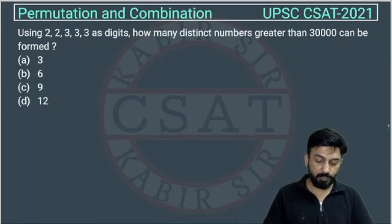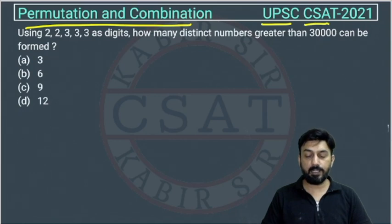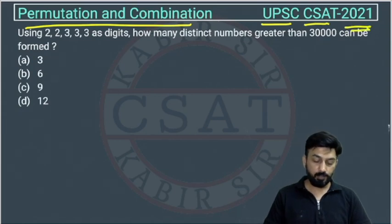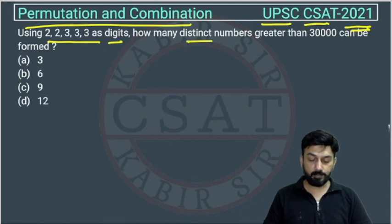This is a question from permutation and combination that was asked by UPSC in CSAT paper of 2021. Using these numbers as digits, how many distinct numbers greater than 30000 can be formed?